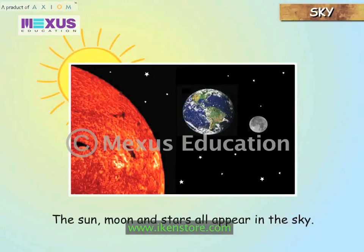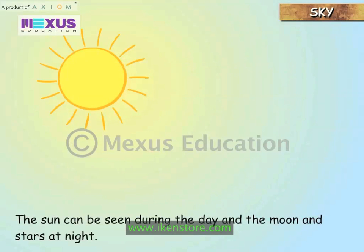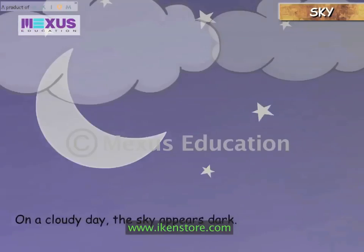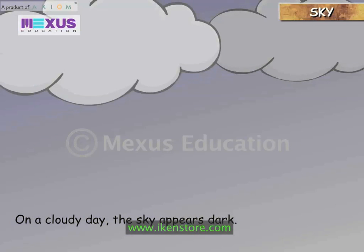The Sun, Moon and stars all appear in the sky. The Sun can be seen during the day, and the Moon and stars at night. On a cloudy day, the sky appears dark.